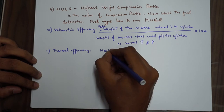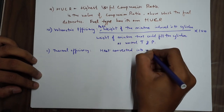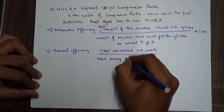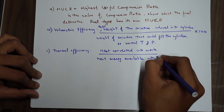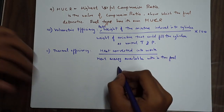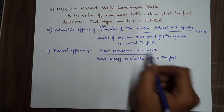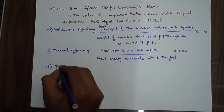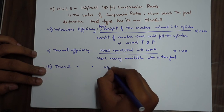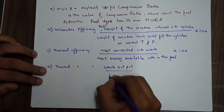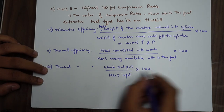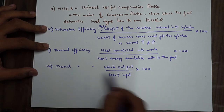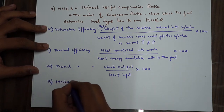Thermal efficiency is related to heat. It is the heat converted into work divided by the heat energy available within the fuel, multiplied by 100. Another way to put it: thermal efficiency is work output divided by heat input, multiplied by 100. So work output from the engine divided by the heat energy input through the fuel gives you thermal efficiency.